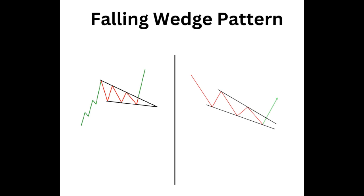A rising wedge can indicate a bearish continuation or reversal pattern. On the left, we have the bearish continuation, while on the right, we have the reversal pattern. During the consolidation period, prices reach higher highs and higher lows. For the rising wedge to form, sellers have to outnumber the buyers. When we code the rising wedge pattern, we need the slopes to be positive and converging.